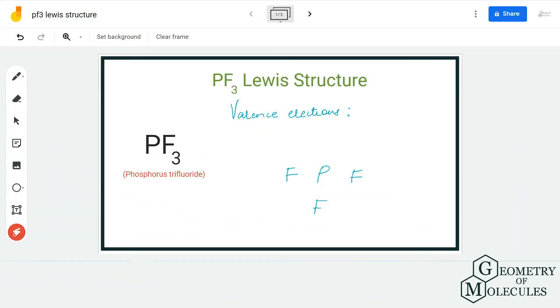Hi guys, welcome back to our channel. In today's video, we are going to help you determine the Lewis structure for PF3 molecule, the chemical formula for phosphorus trifluoride. To determine its Lewis structure, we are first going to look at the total number of valence electrons for this molecule.